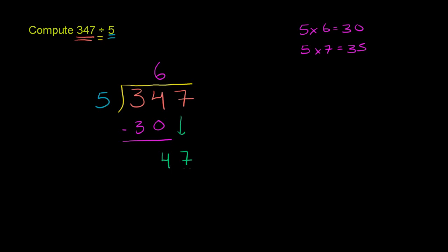5 goes into 47 how many times? Well, let's see. 5 times 8 equals 40—so that would work. But let's see if we can go in even more times. 5 times 9 equals 45. That'll work. That's still less than 47. And then we have 5 times 10 is 50. So this is too big.